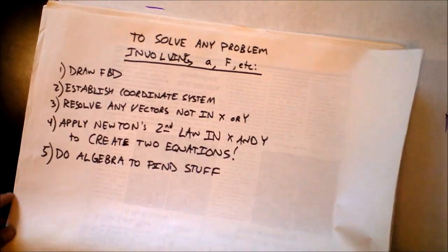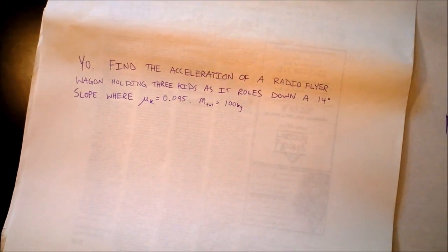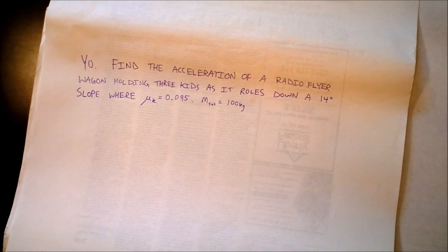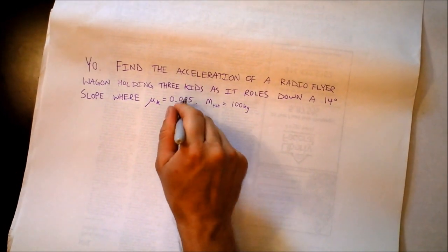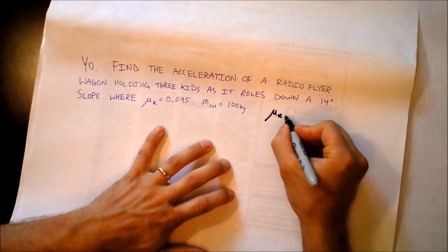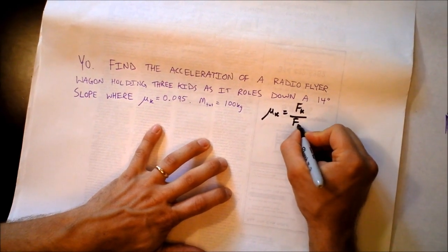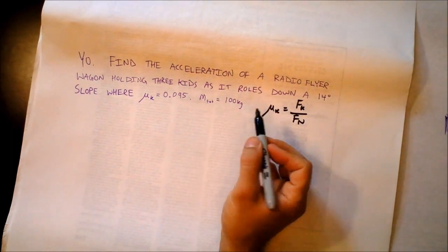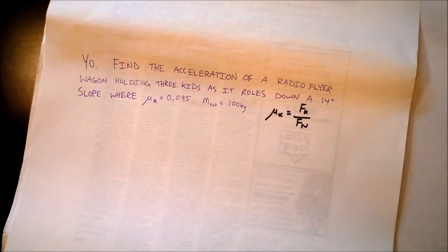Here's a problem. The problem says, yo, find the acceleration of a radio flyer wagon holding three kids as it barrels down a 14-degree slope where mu sub k is 0.095. Let's get an equation for that. We know that mu sub k is the force of kinetic friction divided by the normal force, and you should memorize that. The mass is 100 kilograms.